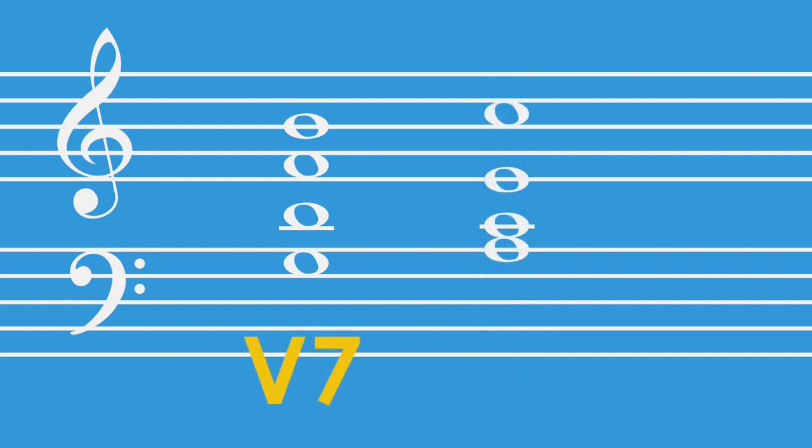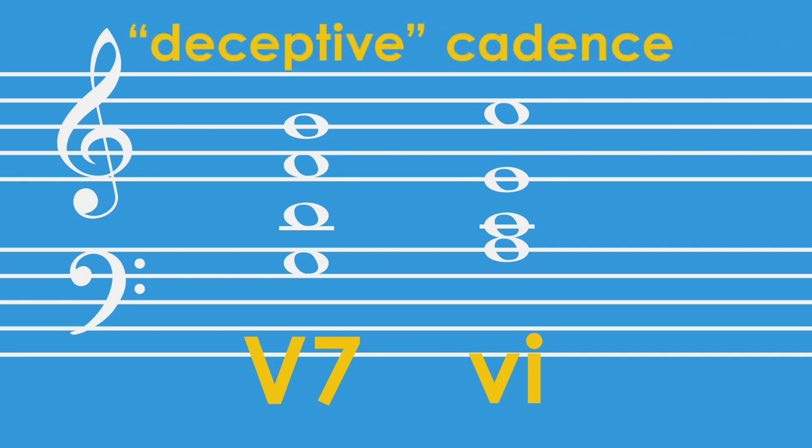As you can tell, going from the 5 to the 6 is unexpected, which gives this cadence its name — the deceptive cadence — because your ear wants to hear that 5 chord resolve to the 1, like this. Especially if that 1 chord was already established earlier in the music.